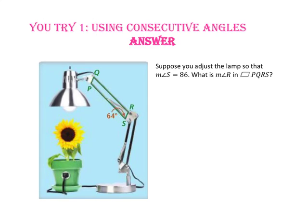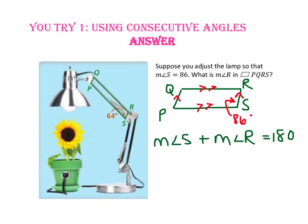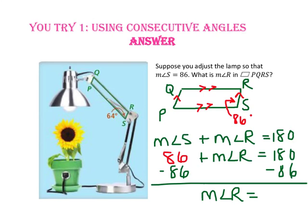Suppose we adjust the lamp so that the measure of angle S is 86 degrees. What is the measure of angle R in parallelogram PQRS? Since we have a quadrilateral that is a parallelogram, the consecutive angles will be supplementary, so the measure of angle S plus the measure of angle R will equal 180. Substituting 86 in for angle S and subtracting 86 from both sides, the measure of angle R is 94.